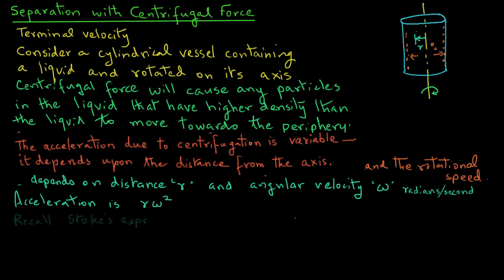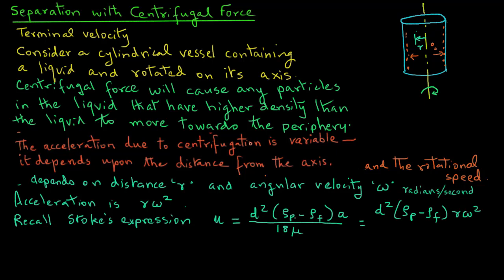Recall that Stokes expression allows us to determine the terminal velocity u as d square times the density of the particles minus density of the fluid multiplied by a, the acceleration, divided by 18 mu. Recall from the previous tutorial that we were considering earlier the acceleration due to gravity, so instead of a, we had used the term g for acceleration due to gravity. But here we have acceleration a, and that acceleration a is r times omega square.